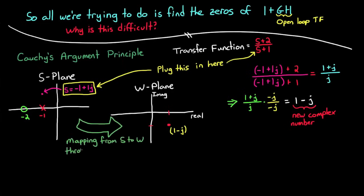This process of plugging in one complex number in the s-plane and getting a new complex number in the w-plane is called mapping. So the transfer function maps a point from the s-plane to a different point in the w-plane. And if we add a second s-point near the first, we're going to get a second point somewhere else on the w-plane.